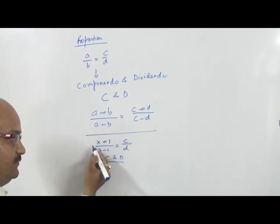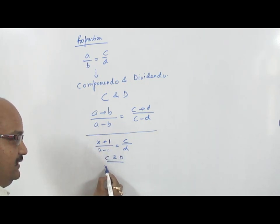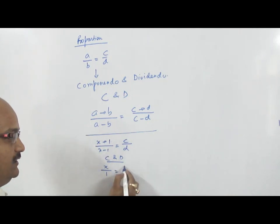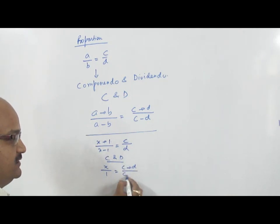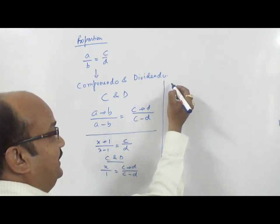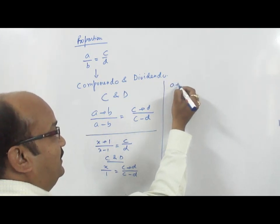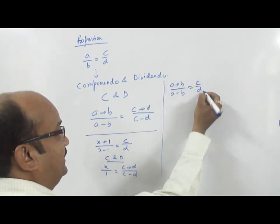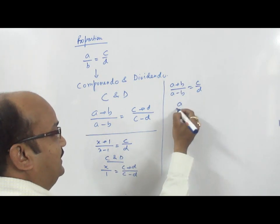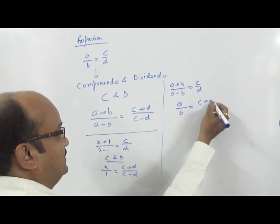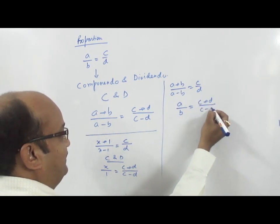Its conversion form is: it will become X and 1. Either X, or C plus D upon C minus D. This is again — if we have A plus B upon A minus B is equal to C by D, we can write it as A by B is equal to C plus D by C minus D.